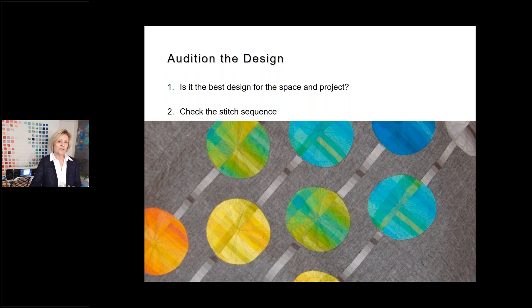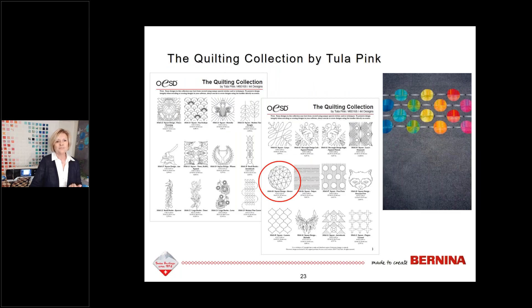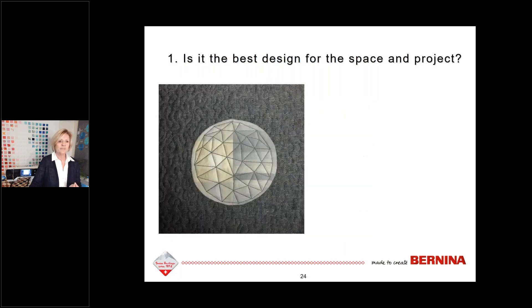Let me explain why auditioning is so very important. For the Beads quilt, I was looking for a circular design to fill the string of beads and saw one in the Tula quilting collection that I thought was perfect. I decided — thankfully — to make a sample. In the first test, I reduced the size to fit inside the bead, but after stitching it I realized it clearly showed that my pieced bead was not a perfect circle. I tried enlarging the design so the outside was slightly larger than the bead, but it still didn't give the dimensional effect I was looking for.